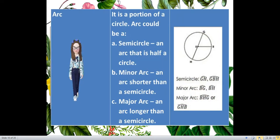Next, we have the concept of arc. Arc is a portion of a circle. We have three kinds of an arc. We have the semicircle, the minor arc, and the major arc. Let us start with semicircle.